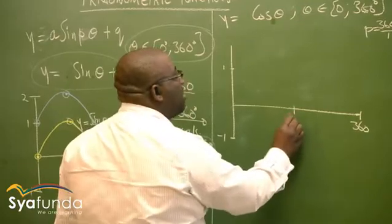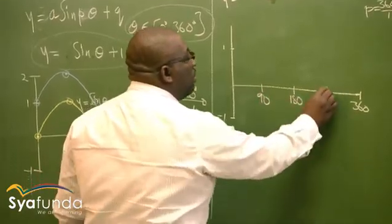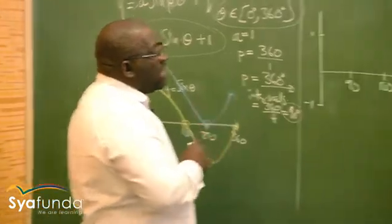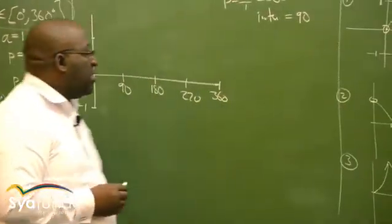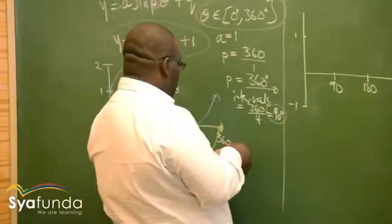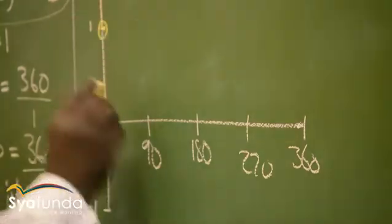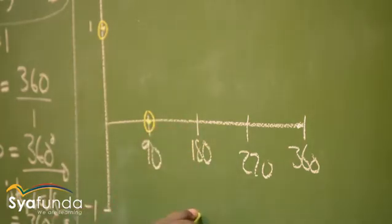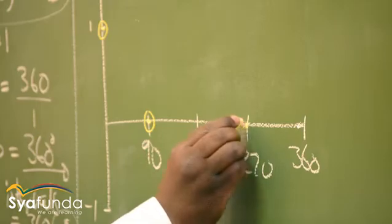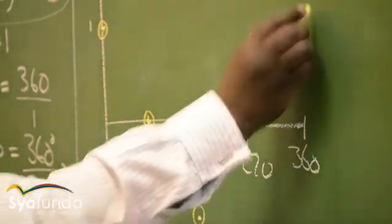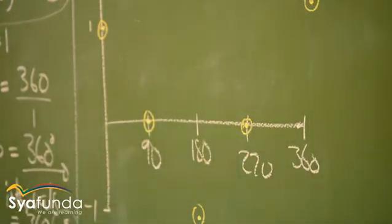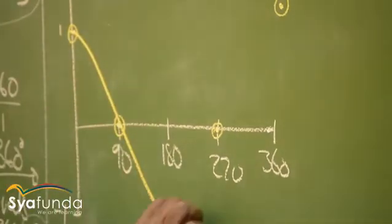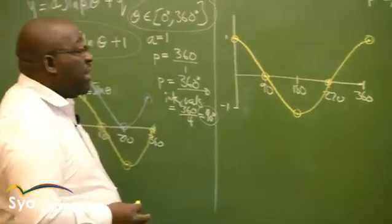Let's sketch this cosine graph. Remember, the cosine graph starts from 1 at the y-axis. At the next 90 degrees — at 90 — it cuts the x-axis. At 180 it is at minus 1, that's where it turns. Moving on, at 270 it cuts the x-axis again. The last important point is (360, 1). That is how the cosine graph looks. Make sure your graph has smooth curves.